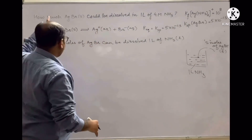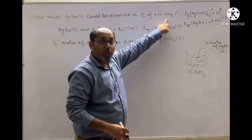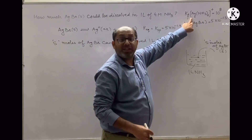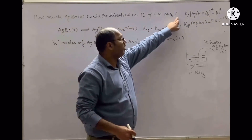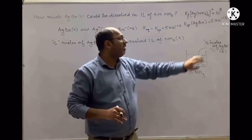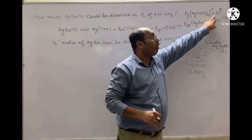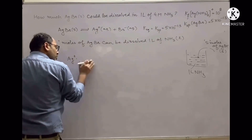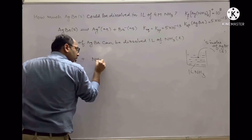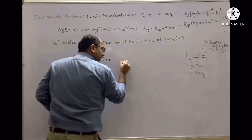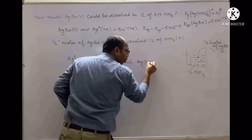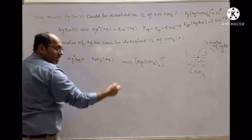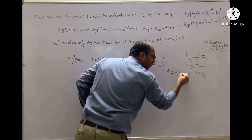Whatever Ag⁺ is furnished by AgBr will react with ammonia, because ammonia acts as a ligand and complexes with Ag⁺ to form a complex ion. The formation constant is very large — 10 raised to power 8. This is really a very large equilibrium constant and definitely this is the key point to solve the question. Ag⁺ reacts with ammonia to form the complex cation, and this formation constant Kf = 10⁸ is given.